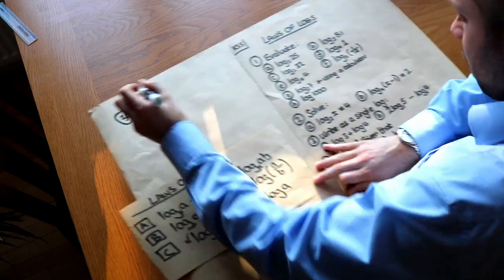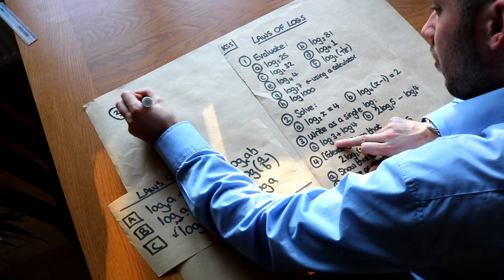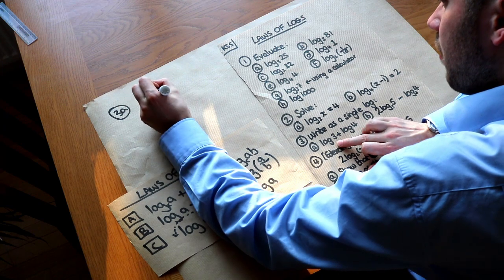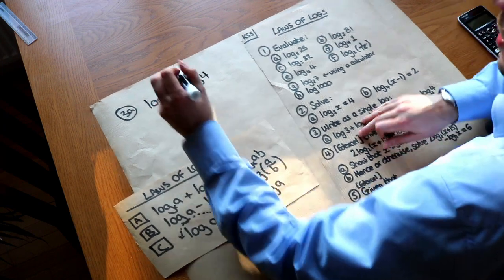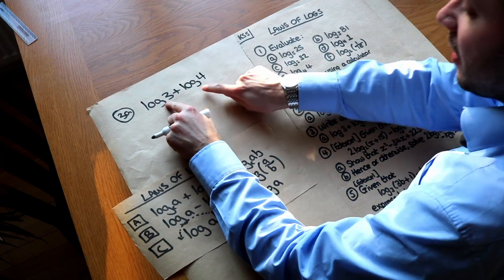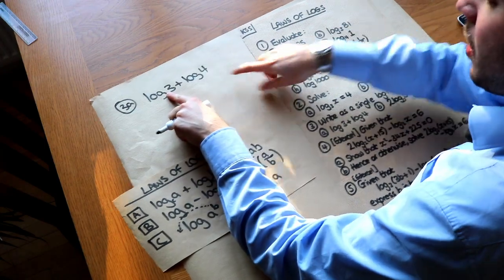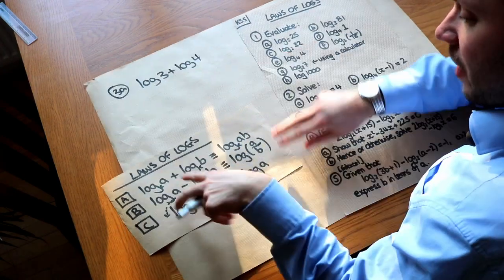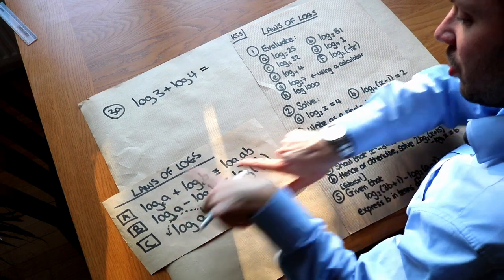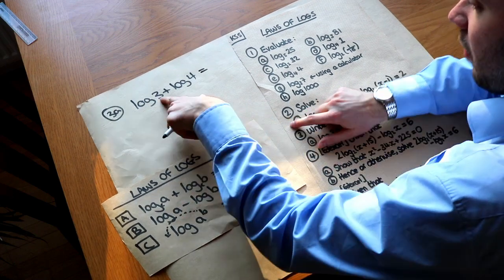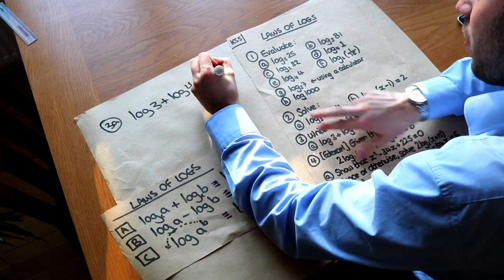Part a: write log 3 + log 4 as a single log. They're both consistent bases — both base 10. Using the first law, when you add two logs you multiply the arguments: 3 × 4 gives log 12.